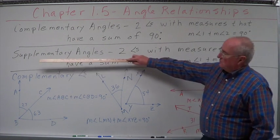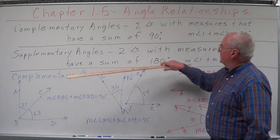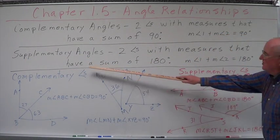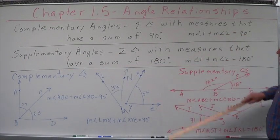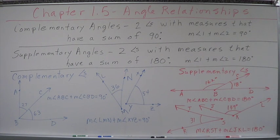Supplementary angles: two angles with measures that have a sum of 180 degrees. What does that mean? The measure of angle 1 plus the measure of angle 2 equals 180.